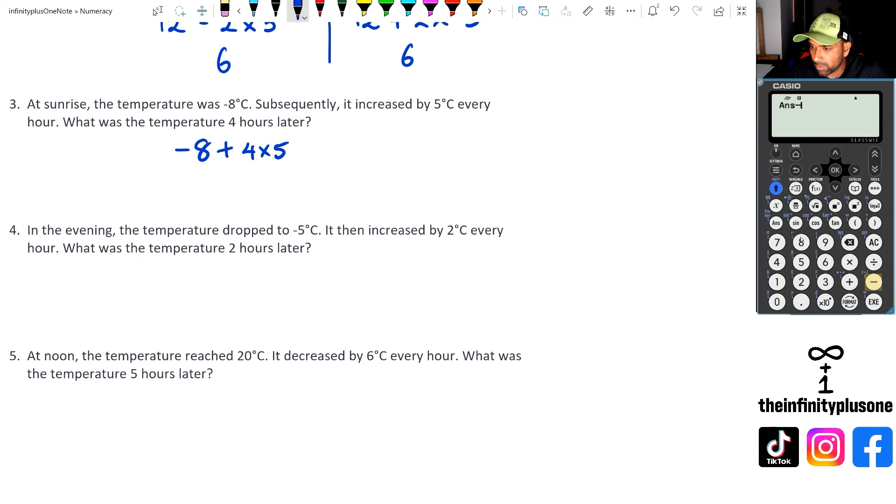What was the temperature four hours later? So we're going to do plus four times five. Let's put this in the calculator. We've got minus eight plus four times five, which is 20, and that should give us positive 12 degrees.